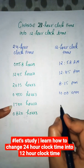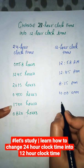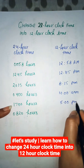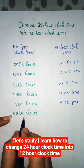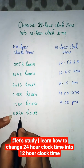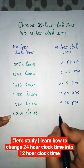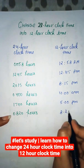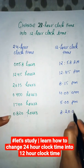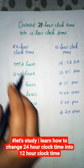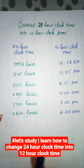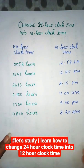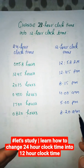1700 is 5:00 p.m. 0820 is 8:20 a.m. So in this way we can change 24-hour clock time to 12-hour clock time.